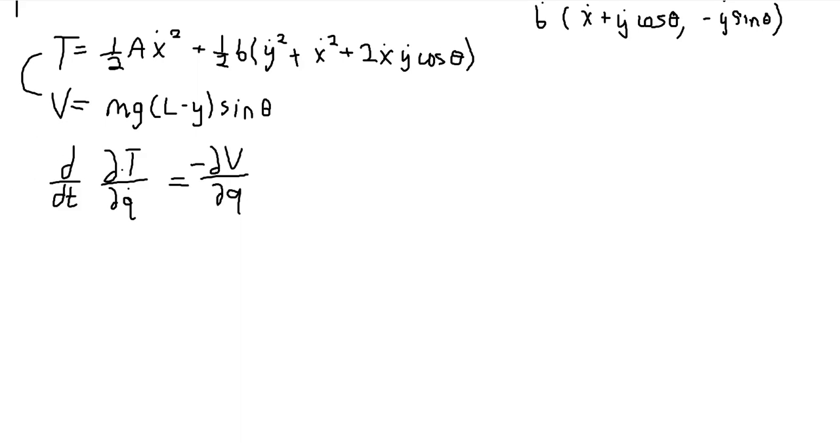So we have a time derivative of partial with respect to the kinetic energy with respect to general speed is equal to the negative of the partial of the potential with respect to general position. And so this almost looks like when we have a force and we say that the force is equal to the negative gradient of the potential energy. That's pretty much what this is.